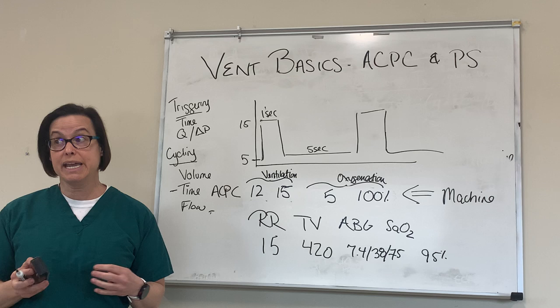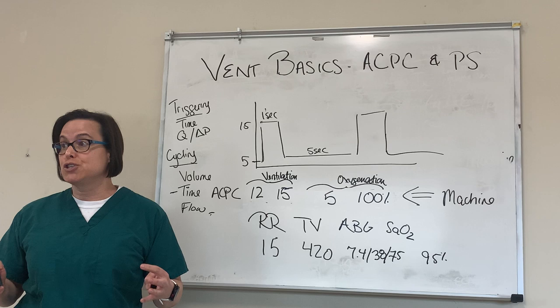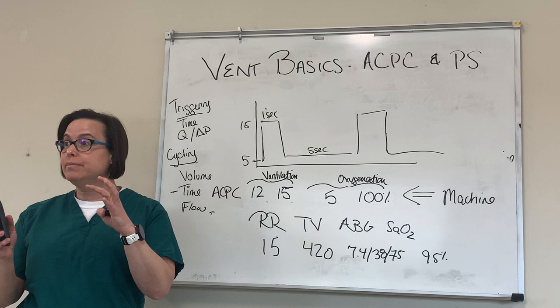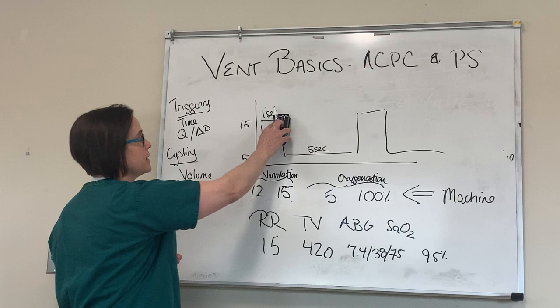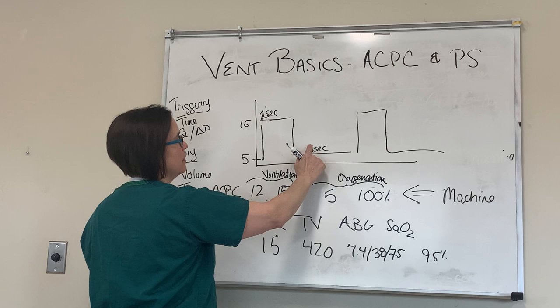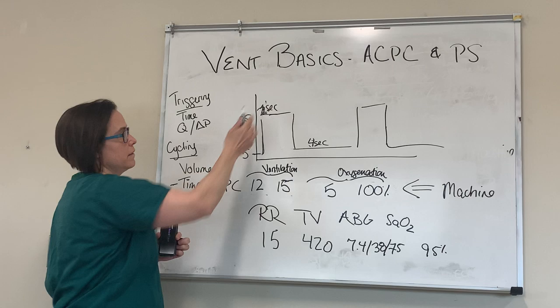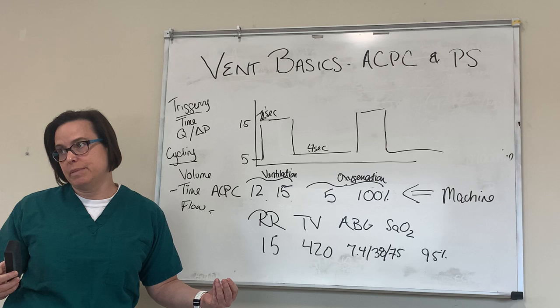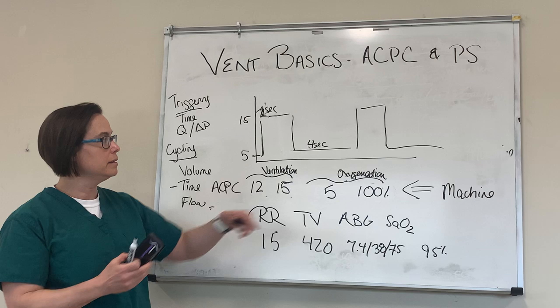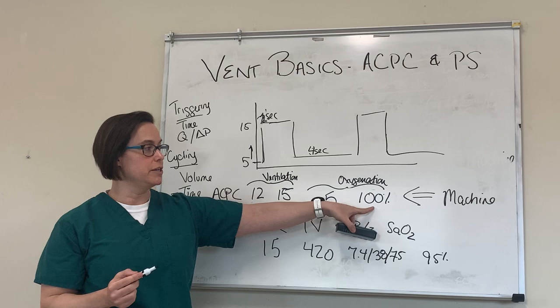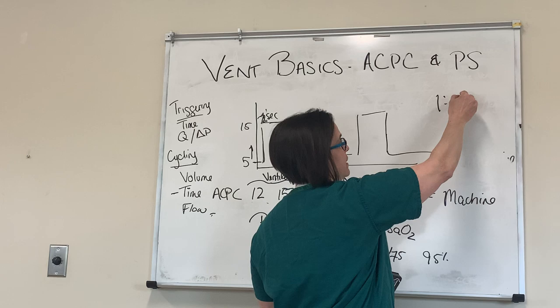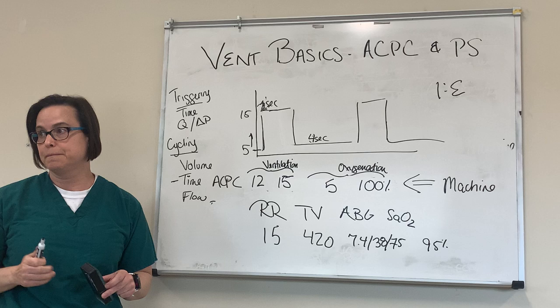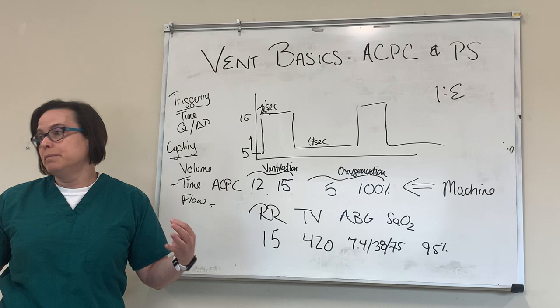Breathing normally, your I to E ratio is about one to two or one to three. So for a COPD patient, a 1:5 ratio gives them extra time to exhale. However, if I have a patient who's not oxygenating well, the thing that improves oxygenation is more time at the higher pressure where gas exchange can occur. So I might change this to two seconds inspiration and four seconds expiration — spending more time at the higher pressure means better gas exchange and better oxygenation. So not only can we increase PEEP or FiO2 to improve oxygenation, we can also change the I to E ratio.